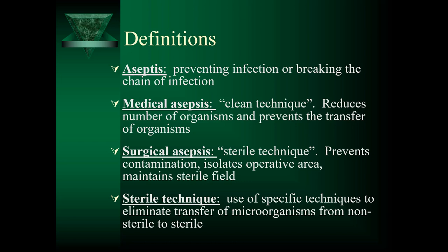Surgical asepsis is known as sterile technique. The techniques used in maintaining surgical asepsis are much more rigid than those under medical asepsis. This includes practices to make and keep objects and areas free from microorganisms, involving the setup of a sterile field, applying and wearing sterile gloves, and handling sterile instruments without contaminating them. Although many think sterile technique is limited to the operating room, it is used in many places and procedures throughout all facilities, such as inserting a Foley catheter, starting an IV, or changing a wound dressing.